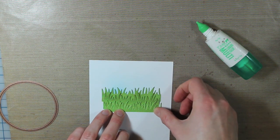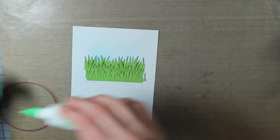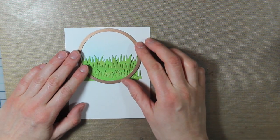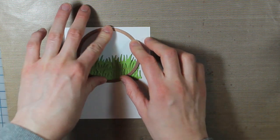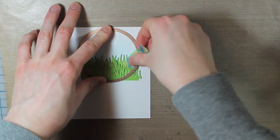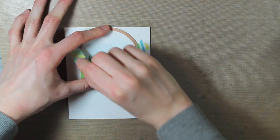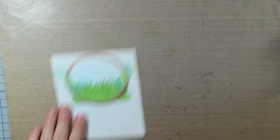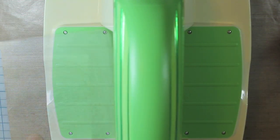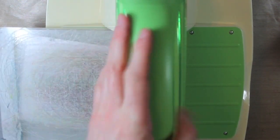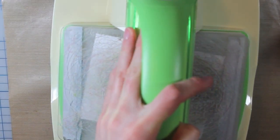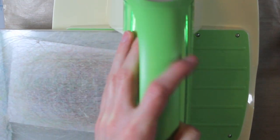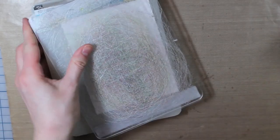Then I'm going to go ahead and take my circle die and just place that right over that whole scene, and then I'll secure that into place with my washi tape. Then I'm going to go ahead and cut this out with my Cuddle Bug. Just so you're aware, depending on how many layers of grass you have, it might be a little bit tricky to run through your Cuddle Bug. This one actually wasn't too bad, and I did run it through twice just to make sure that all of those layers were cut out.